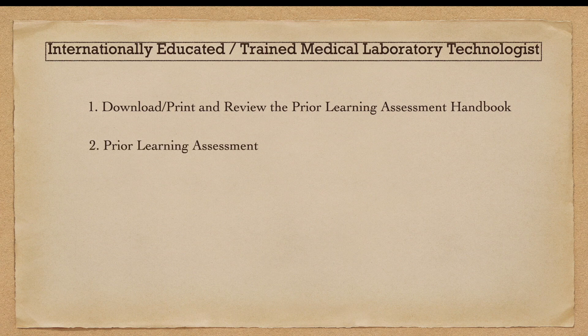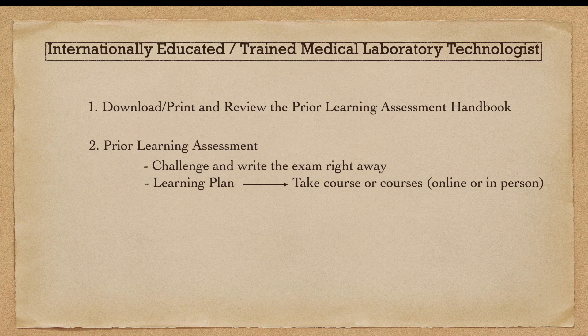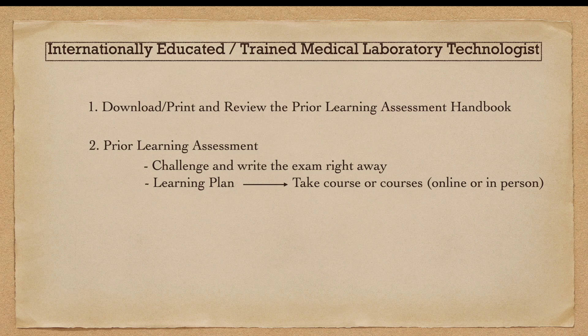After you submit all the documents and pay the necessary fees, CSMLS will send you back a technical report. This report will tell you if you can take the exam right away or if you need to make a learning plan — meaning you have to take a course or courses. The more experience and the better educational background you have, the less likely you'll need a course. If you were able to work in all the disciplines — clinical chemistry, clinical microbiology, hematology, transfusion science or blood bank, and histology — then your technical report will likely tell you that you can just write the exam.